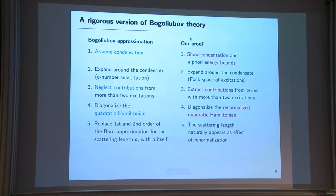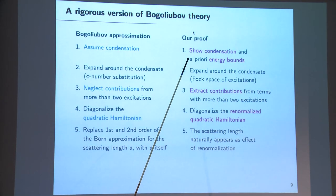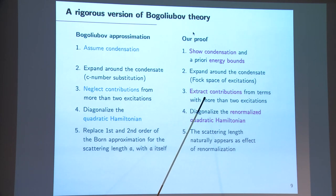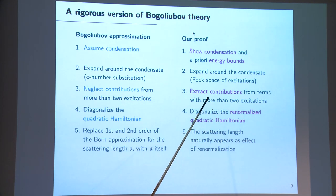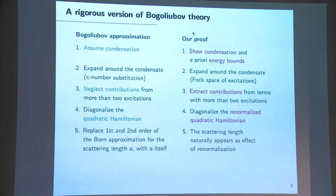The line of our proof is as follows. First, we show that condensation occurs in the Gross-Pitaevski regime, obtaining a priori energy bounds on the number of excitations and their energy. Then, as in Bogoliubov theory, we expand around the condensate, but now we do not neglect the cubic and quartic terms — we take into account the energy coming from them. Once we do this, we realize our system can be expressed in terms of a quadratic Hamiltonian that has been renormalized: its coefficients no longer depend on the potential but only on the scattering length, so the scattering length appears naturally as an effect of this renormalization.